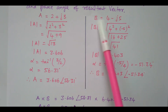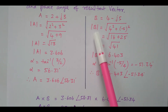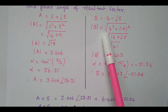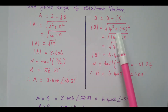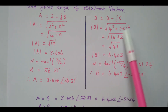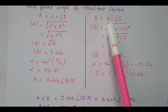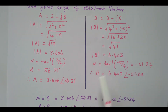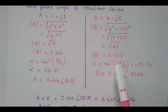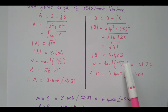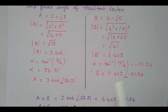Similarly, the second vector is B equal to 4 minus J5. You will find the magnitude: square root of 4 squared plus minus 5 squared, that is real term squared plus imaginary term squared. So the value is 6.403. The angle is tan inverse B by A — imaginary term divided by real term — minus 5 by 4 — so it is minus 51.34.